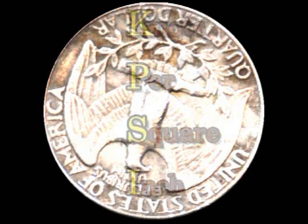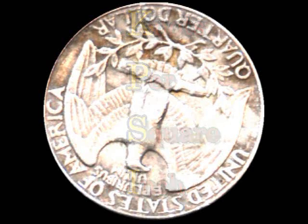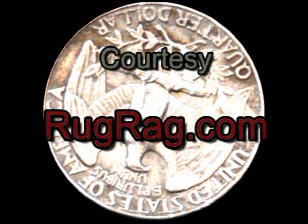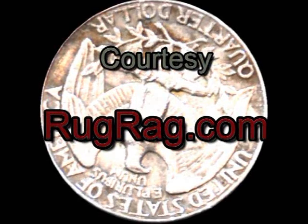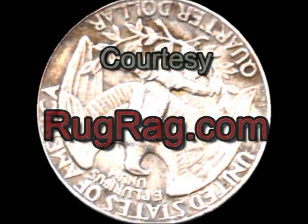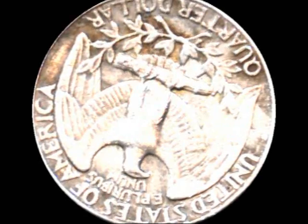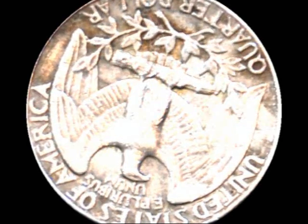Hi, this is Dave from RugRag.com. What you're watching is an instructional video on how to count KPSI. KPSI stands for knots per square inch, which is one of multiple qualitative measures used by those in the rug industry. This is done by inspecting the reverse side of an oriental rug and physically counting knot density in one square inch.